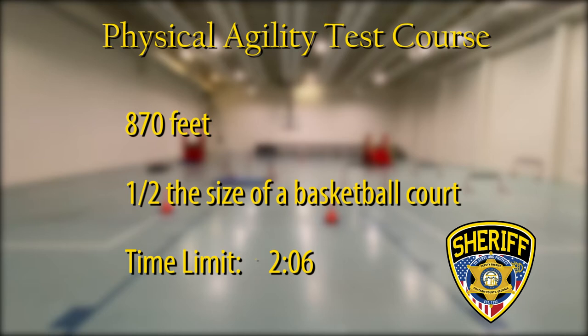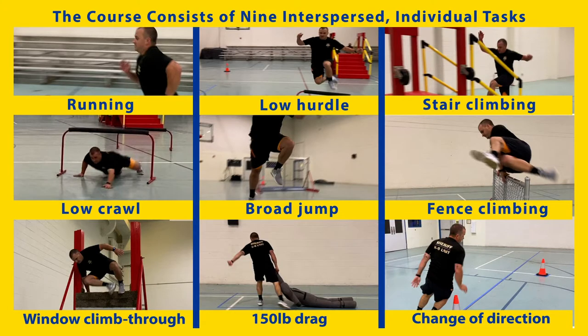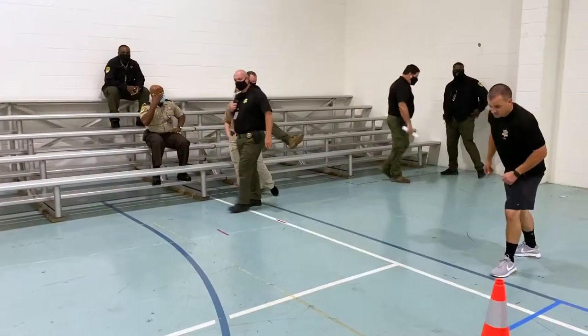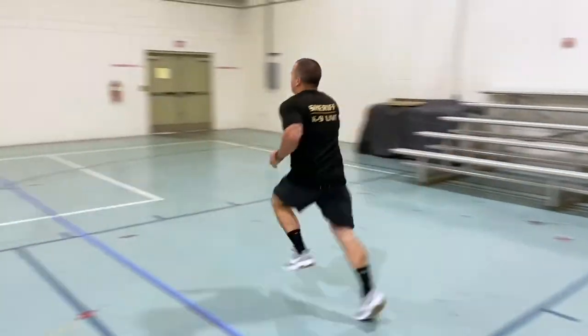The physical agility test course measures 870 feet and is laid out over half a basketball court. The time starts on the candidate's movement from the starting line and ends when they pass the finish line. The course consists of a series of nine interspersed individual tasks arranged in a continuous format that are essential physical job tasks for law enforcement training. The candidate starts the course at a point indicated on the course map.